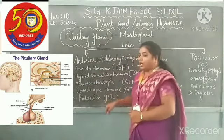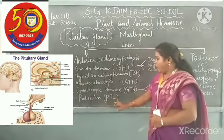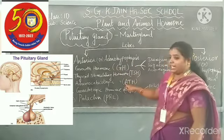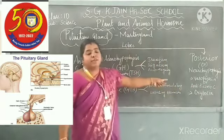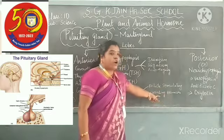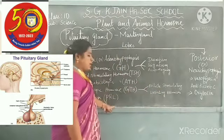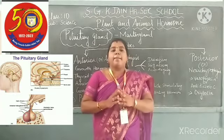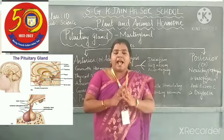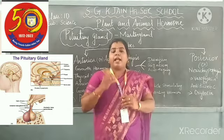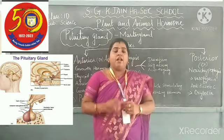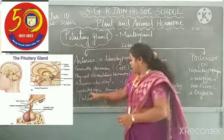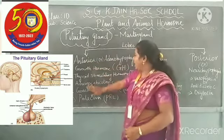Next is prolactin. The short terms are very important: GH, TSH, ACTH, FSH — the follicle stimulating hormone — and LH, the luteinizing hormone, also called the pregnancy hormone. GTH is the gonadotropic hormone. Prolactin is the hormone responsible for the mammary gland. After childbirth, a liquid — milk — is secreted in the mammary gland. For the secretion of milk and feeding of the child, the prolactin hormone is needed. This covers the anterior lobe, which is classified into five types of hormones.